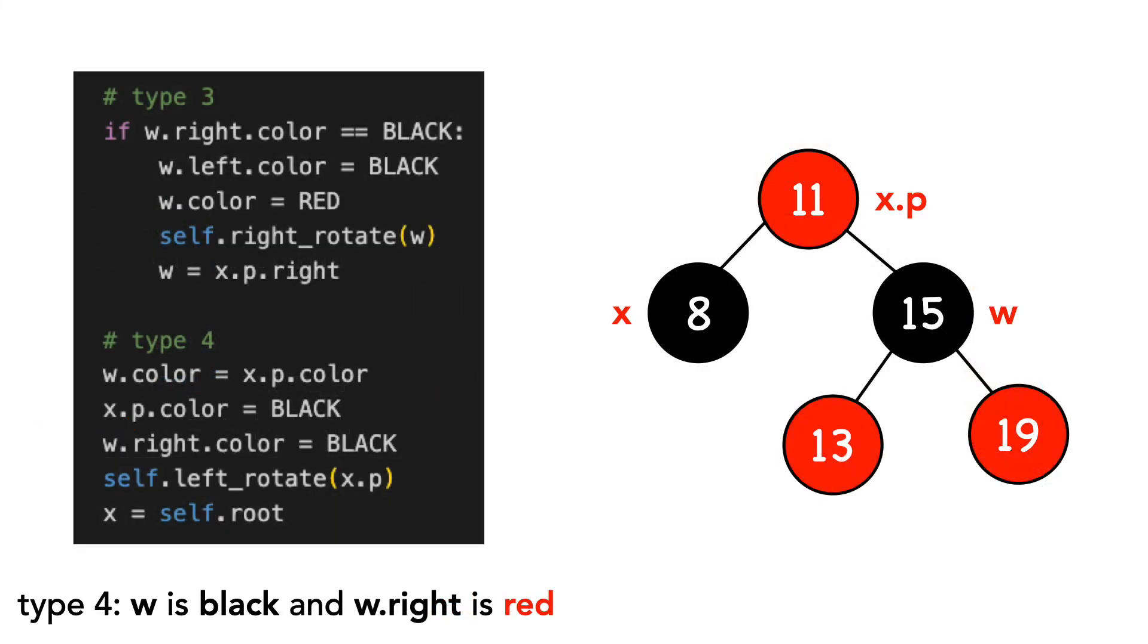Lastly, type 4, where w is black and w.right is red. You'll notice that if we do type 3, we will automatically do type 4. Let's walk through the code.